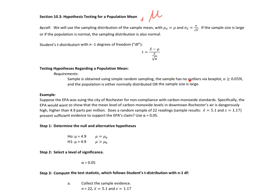The sample has no outliers via box plot. Here's a quick typo - n is less than 5% of N, not greater than or equal to. And then finally the population is either normally distributed or the sample size is large. So three things we have to check.